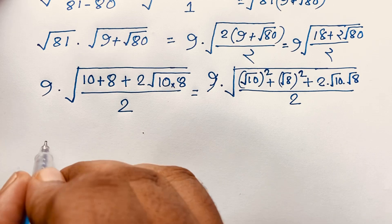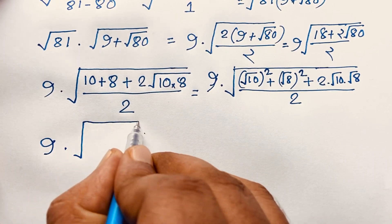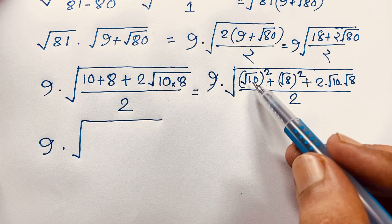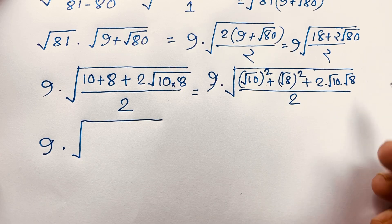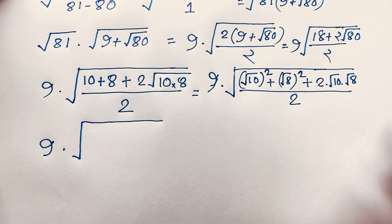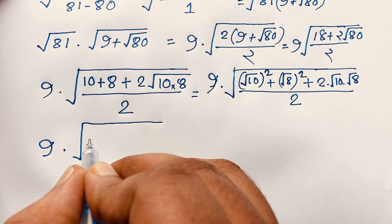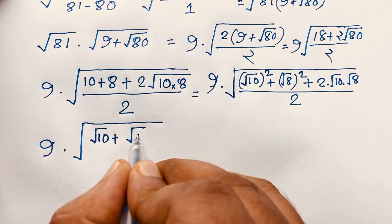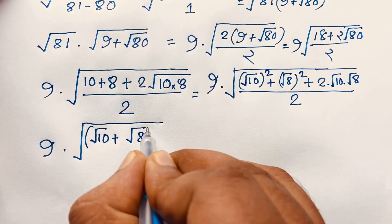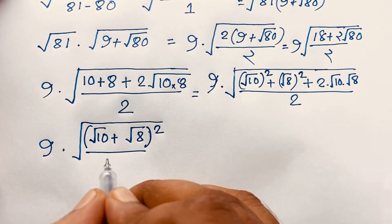Now here, 9 times square root of — if you think of this as A and this as B — note that A squared plus B squared plus 2AB equals (A plus B) whole squared. According to this identity and this math formula, it will be 9 times square root of (square root 10 plus square root 8) whole squared, over 2.